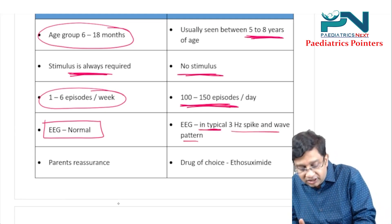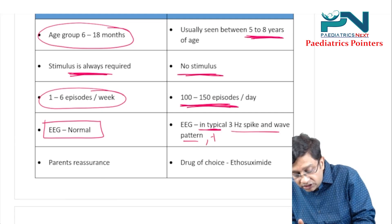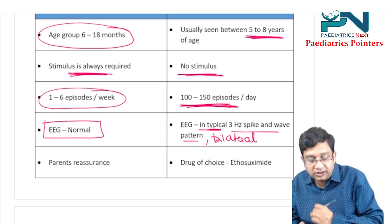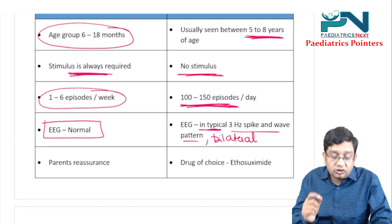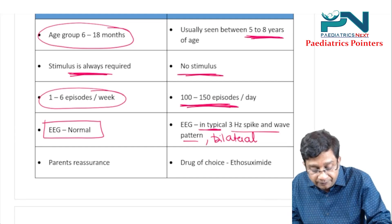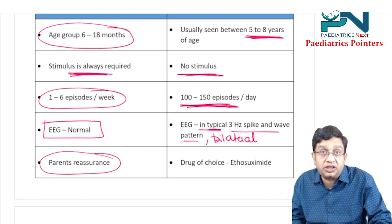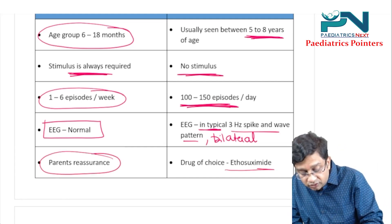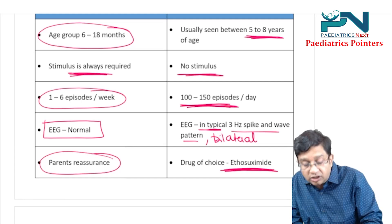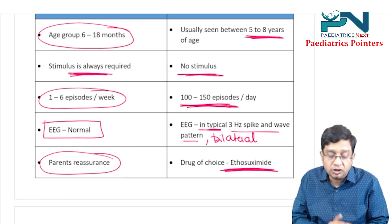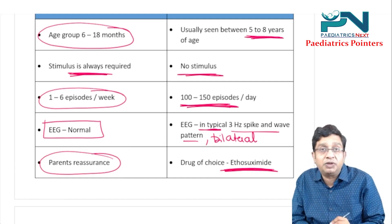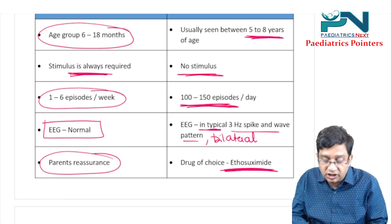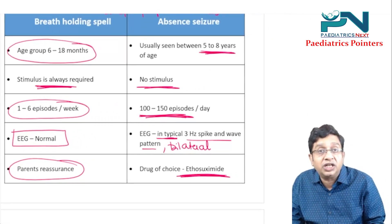On EEG, breath holding spell shows a normal pattern, while typical absence seizure shows a 3 Hz spike and wave pattern that is bilateral and synchronous. Management of breath holding spell requires only reassurance to parents. The drug of choice for typical absence seizure is ethosuximide. These are the key points differentiating breath holding spell from absence seizure.